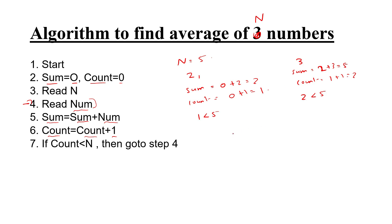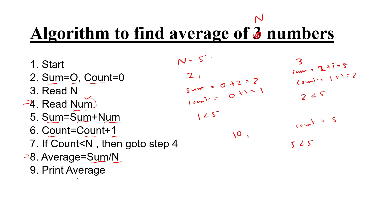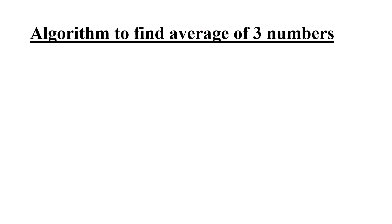Now number 10 is ready. We continue until count finally reaches 5. When 5 less than 5 is no longer true, we know number 8 is the last. Average equals total sum divided by N, then print the average. Stop — that is the algorithm to find the average.